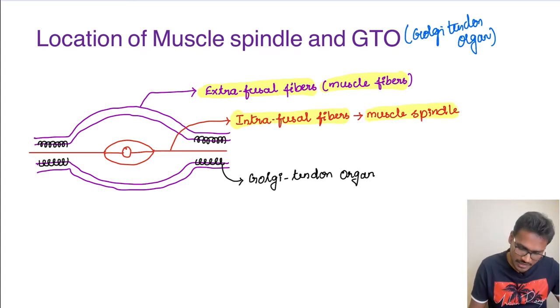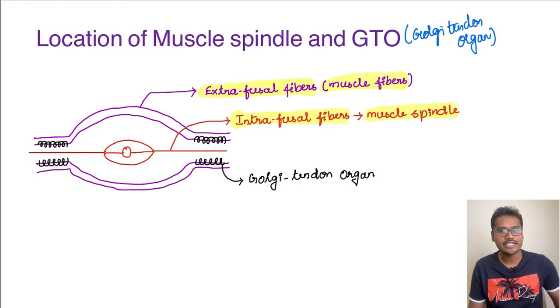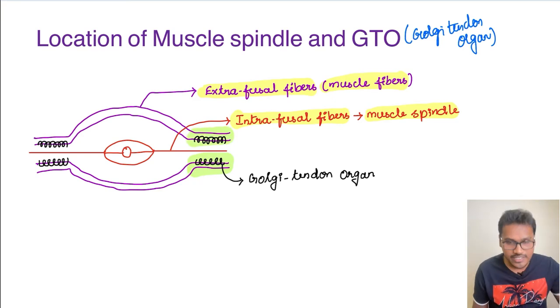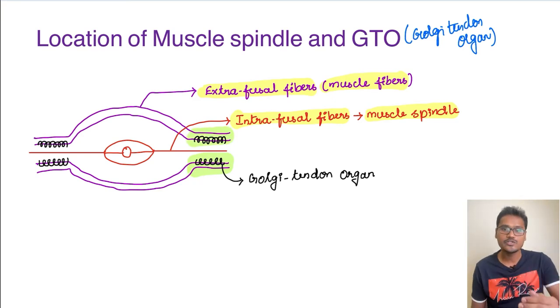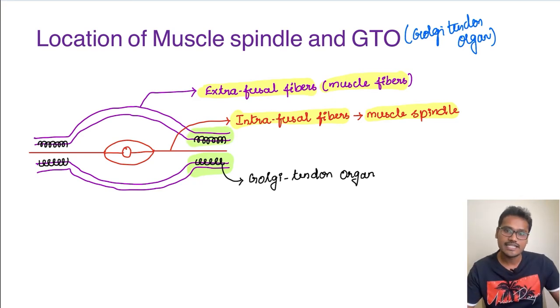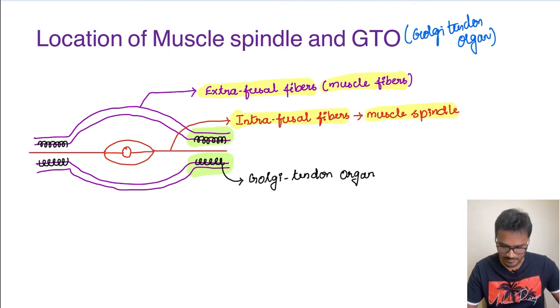Coming to the location of the Golgi tendon organ — as you can see here, the Golgi tendon organ is located in the extrafusal fiber, specifically at the tendinous ends of the extrafusal fiber.